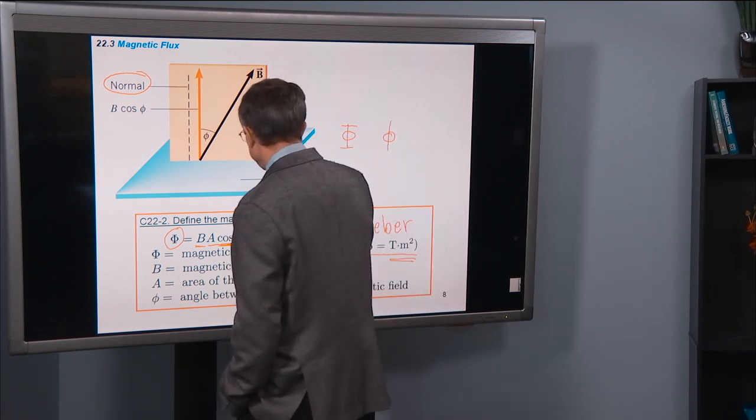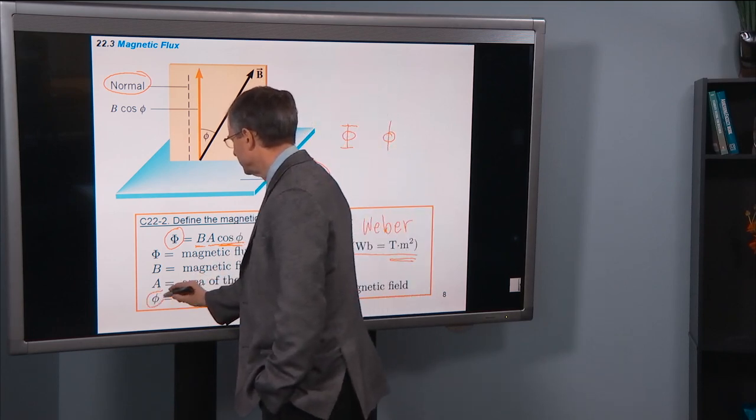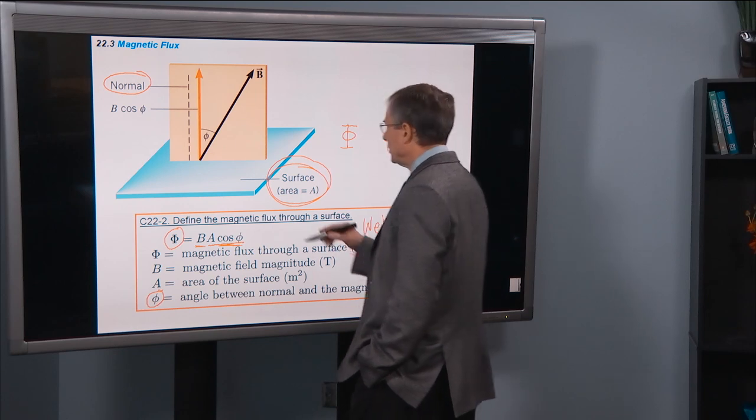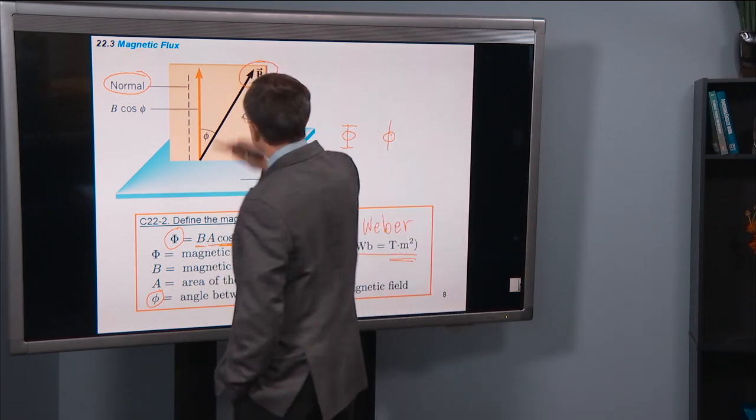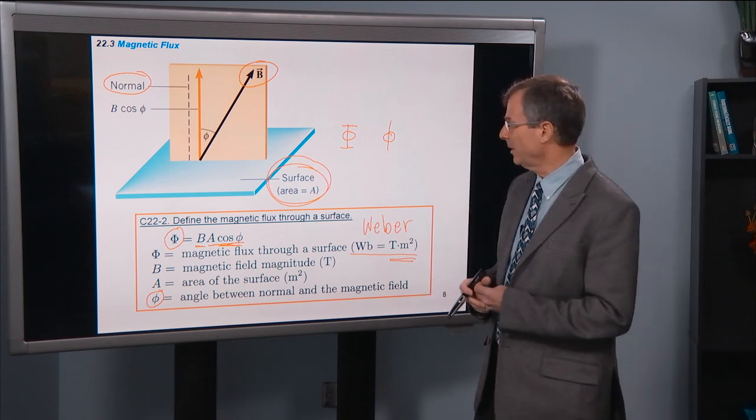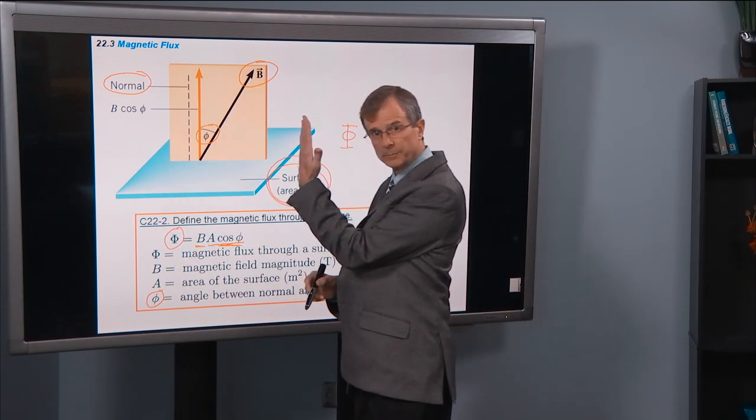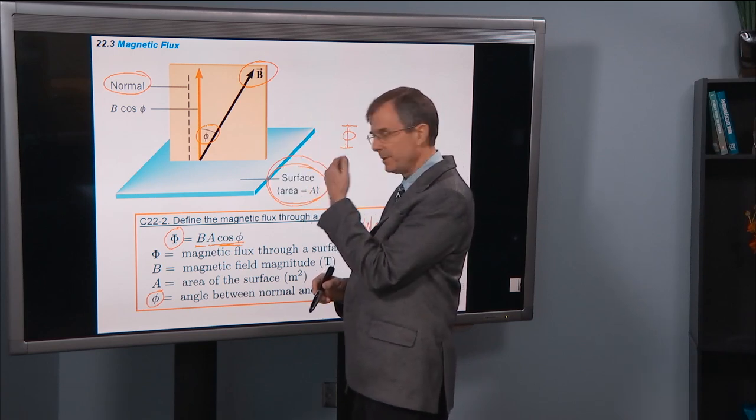And the angle Φ, so this is the lower case Φ, is the angle between the normal and the direction of the magnetic field. So the direction of the magnetic field here is denoted by a black arrow. And that angle Φ is the angle between the normal, perpendicular, and the direction of the magnetic field.